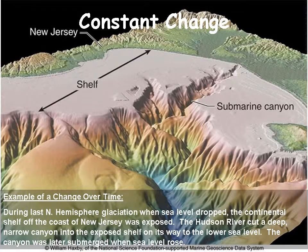As an example of coastlines changing, let's look at the shelf off the coast of New Jersey. Notice there's a submarine canyon right down that shelf. During the last glaciation period in the northern hemisphere, when sea level dropped, the continental shelf off New Jersey was exposed. The Hudson River cut a deep, narrow canyon through that continental shelf, cutting down to a lower sea level. Then the glaciers melted, sea level rose, and we have the coastline as it is today.